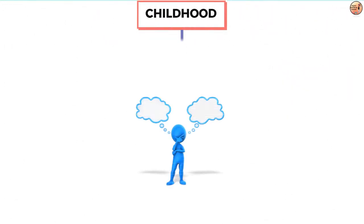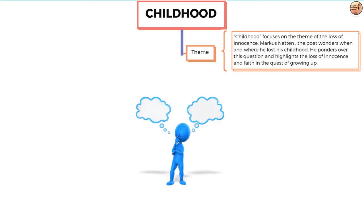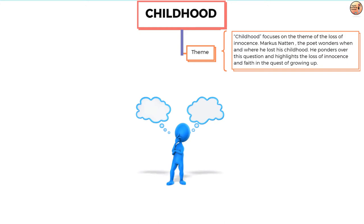The poem Childhood focuses on the theme of the loss of innocence. The poet Marcus Nathan wonders when and where he lost his childhood. He ponders over this question and highlights the loss of innocence and faith in the quest of growing up. Adolescence is a puzzling time when a child is unable to settle with the physical, psychological and other changes in his personality as he becomes a young adult.